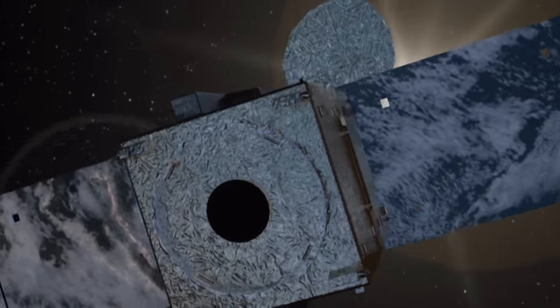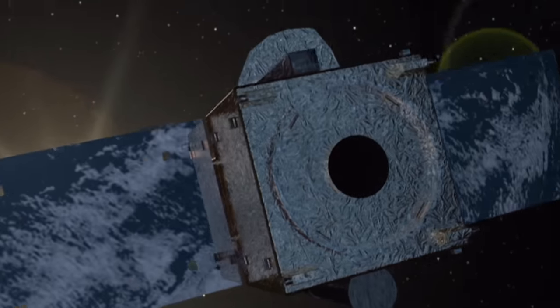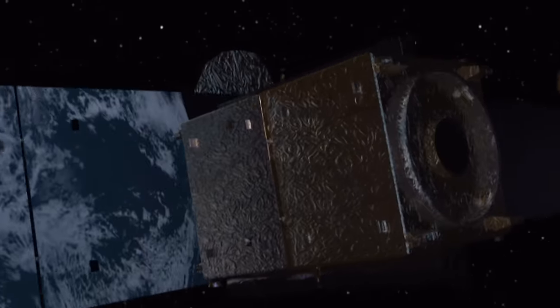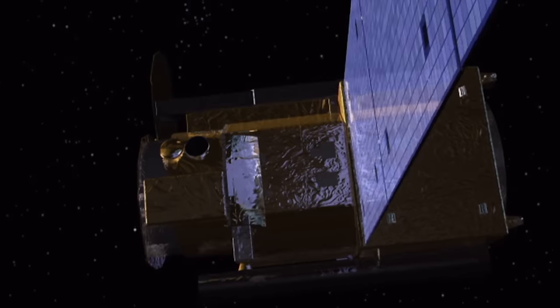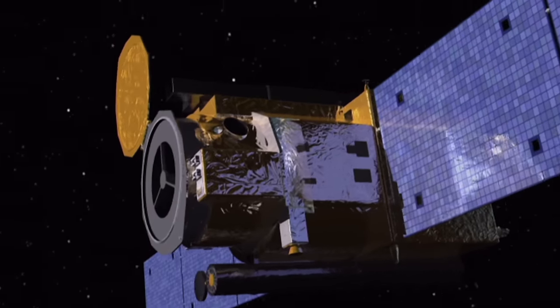HinoD orbits 370 miles above Earth. Its camera peers straight into the sun's atmosphere. It returns the clearest pictures ever of the sun's surface.